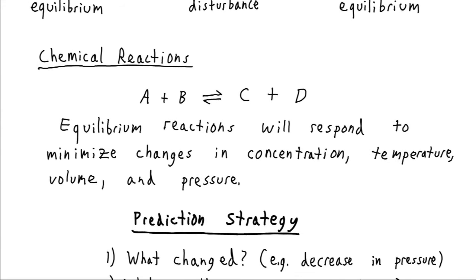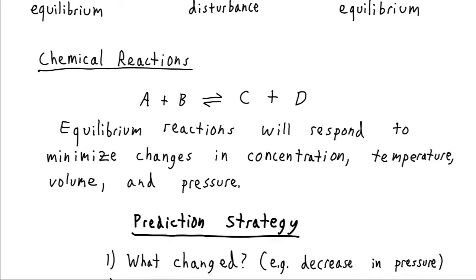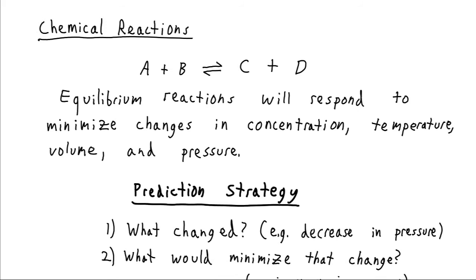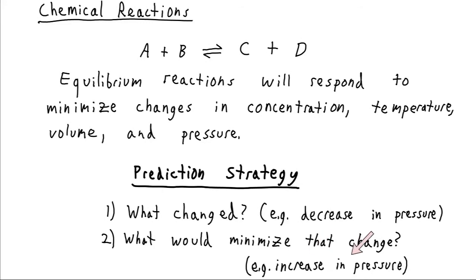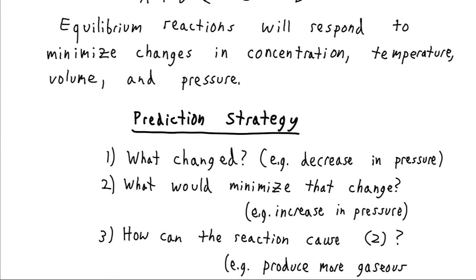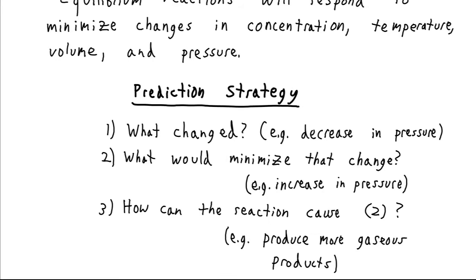Our strategy here requires three things. First, we have to ask what changed — for example, we've decreased the pressure of our system. Then Le Chatelier's principle says something will occur to minimize that change, so we are going to have to partially increase the pressure in response. The last question is how can the reaction cause this increase in pressure to occur? The answer might be to produce more gaseous products. If we produce more gases in our chamber, that would increase the pressure. So whichever side of the reaction has more gas on it would be the direction favored by this change.